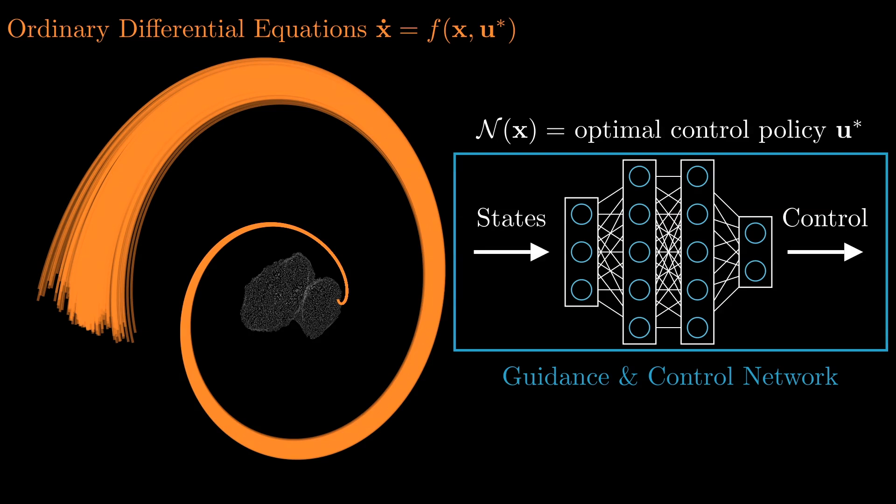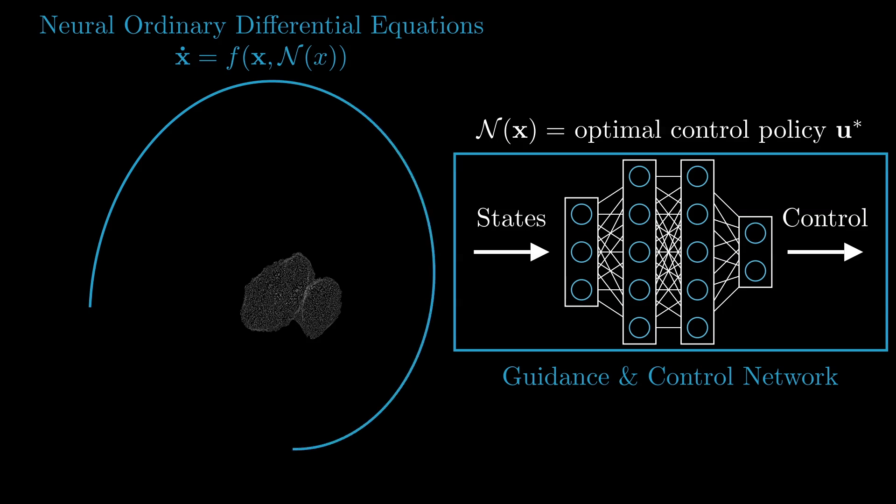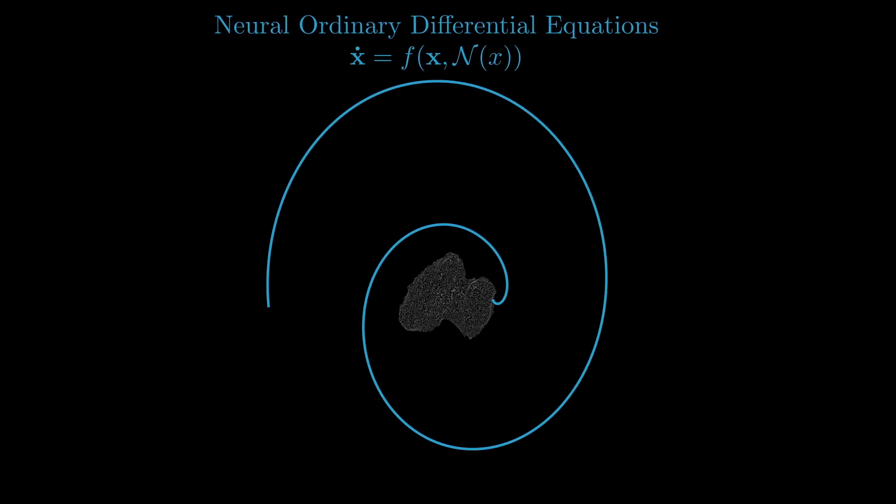Compared to classical approaches, for example traditional nonlinear model predictive control, the trajectory generation and trajectory tracking steps both happen simultaneously. Plugging this network in the right-hand side of the dynamics results in the neural ordinary differential equations. The solution to this system is fully defined by its initial conditions and the network parameters.